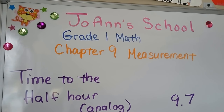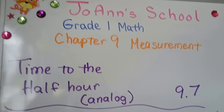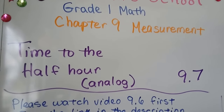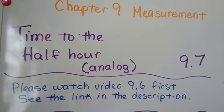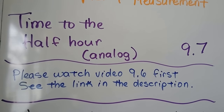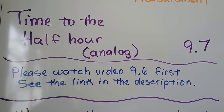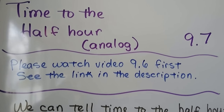Time to the half hour on an analog clock, lesson 9.7. If you haven't seen video 9.6, you need to watch that first — there's a link in the description so you can go there.